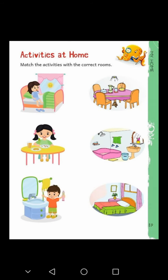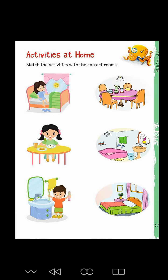Now open page number 39. On this page, you will see some activities on one side and on the other side the rooms where each activity is performed. You have to match each activity with the correct room. Your homework is to read the story and also complete the book work on pages 38 and 39 of your I Can Explore book number 1. Thank you, students.